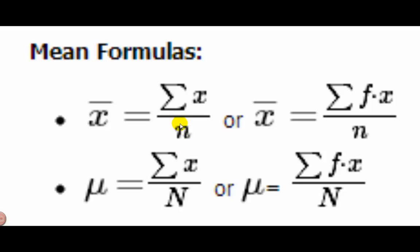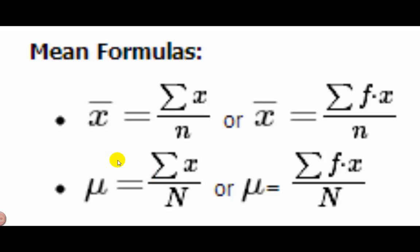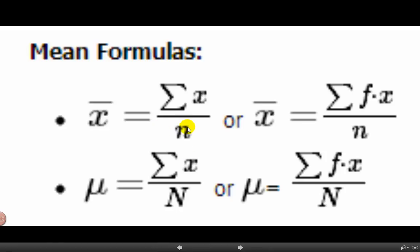We very seldom know the population size. That only occurs if we're looking at something like Major League Baseball, where there are only 750 players — we can find the batting average of all 750. Whereas normally we'd take a sample of a few players and find their average. For a frequency table, we take the frequency of each value, multiply frequency times value, add those up, and divide by n to get the mean.